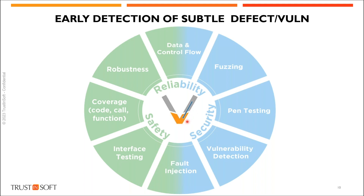TrustInSoft Analyzer contributes to other activities as well. In the V-cycle you have safety activities and cybersecurity activities. We are not saying we replace testing on hardware with the executable — we are going to save time and save iterations in the left branch of the V-cycle. Because we are able to generate billions of input values, we can perform robustness testing at the bottom of the V-cycle, saving you time.